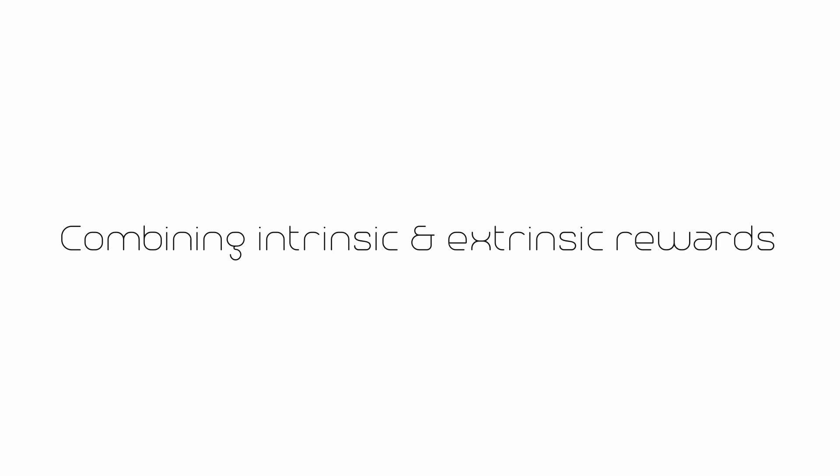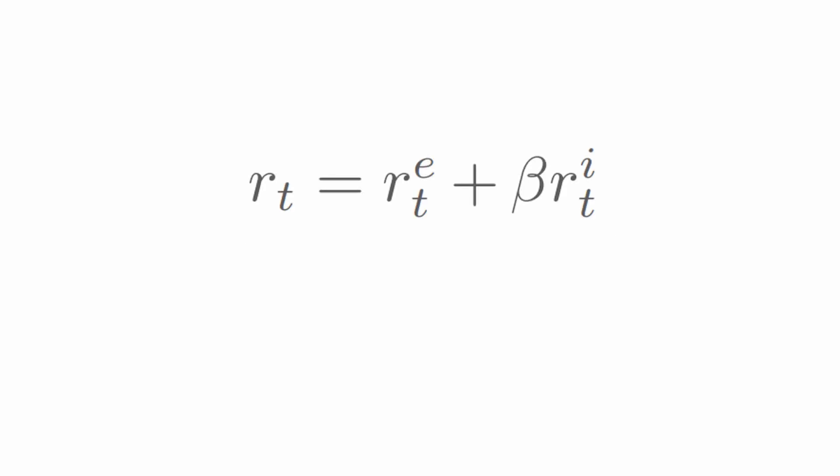See, many algorithms based on intrinsic reward combine the intrinsic and extrinsic reward with a simple fixed multiplier and learn a single value function from it. But this doesn't allow you to balance the trade-off between the two rewards.